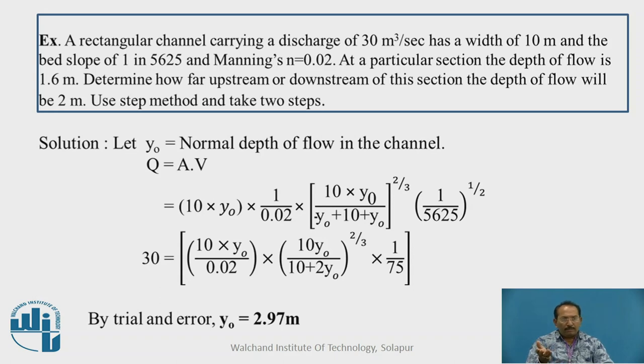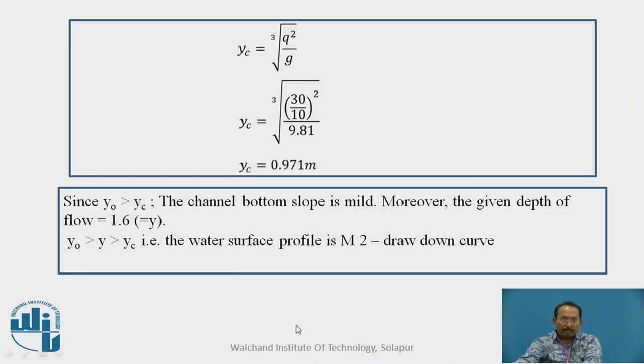We can go for three steps, we can go for four steps, we can go for many steps to get more accuracy. Now putting these values, normal depth is 2.97 and critical depth is 0.97.